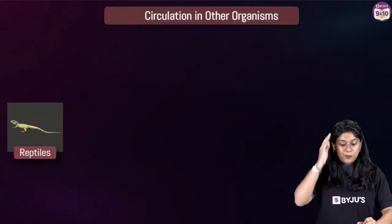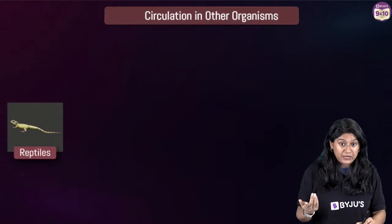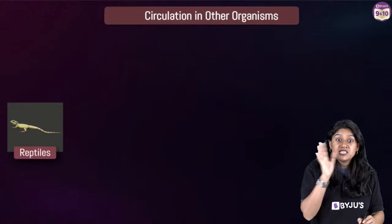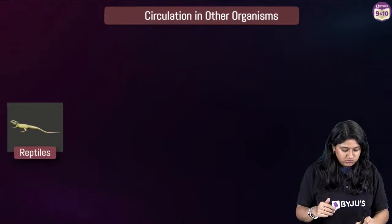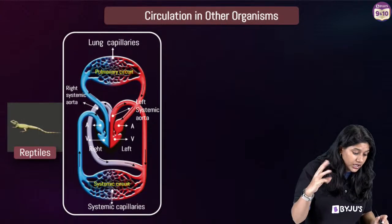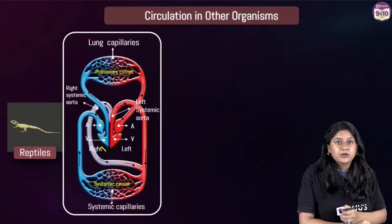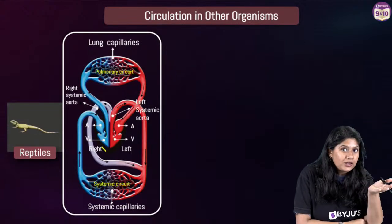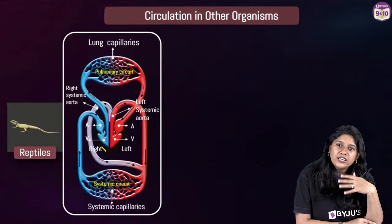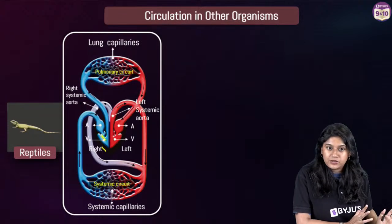Reptiles also have double circulation because they have three-chambered hearts. The exception is crocodiles, which have four-chambered hearts. Not all reptiles have a four-chambered heart — only crocodiles. Other reptiles will have the same thing as other amphibians. Finally, mammals have the same four-chambered heart as us.